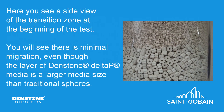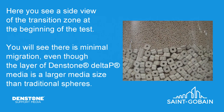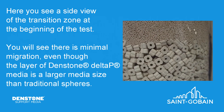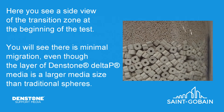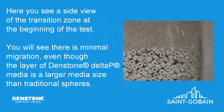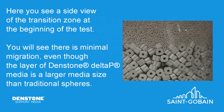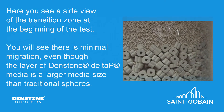Here you see a side view of the transition zone at the beginning of the test. You will see there is minimal migration even though the layer of Dentstone Delta P media is a larger media size than traditional spheres.